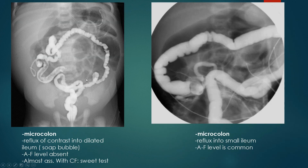In these two cases of micro-colon, we can see the colon diameter compared to the small bowel in the background. In the case of meconium ileus, the contrast will reflux into a dilated terminal ileum with multiple filling defects representing fecal matter, giving a soap bubble appearance.